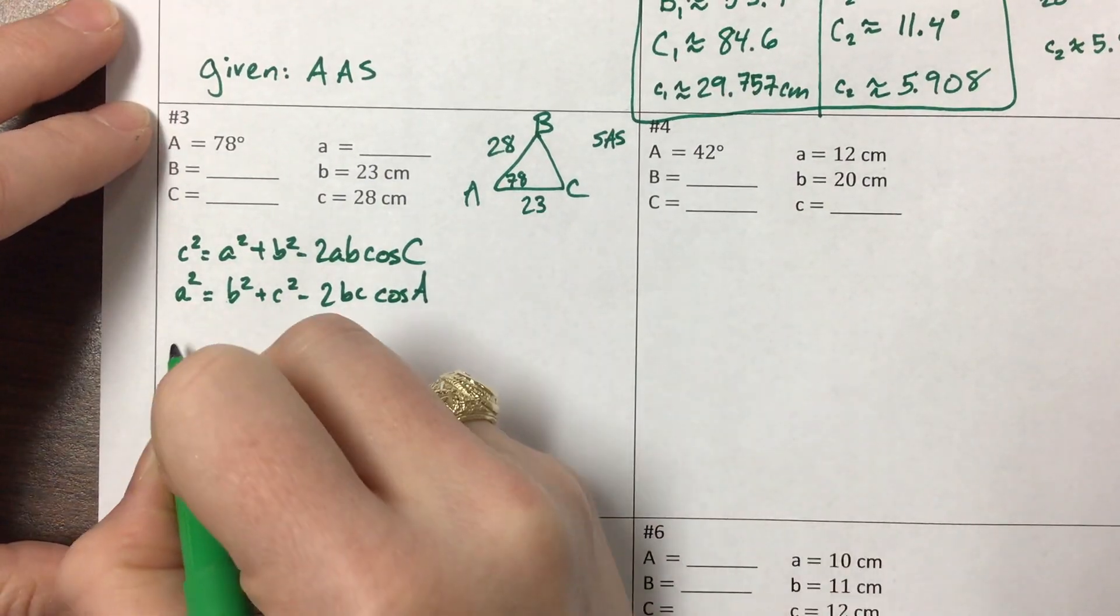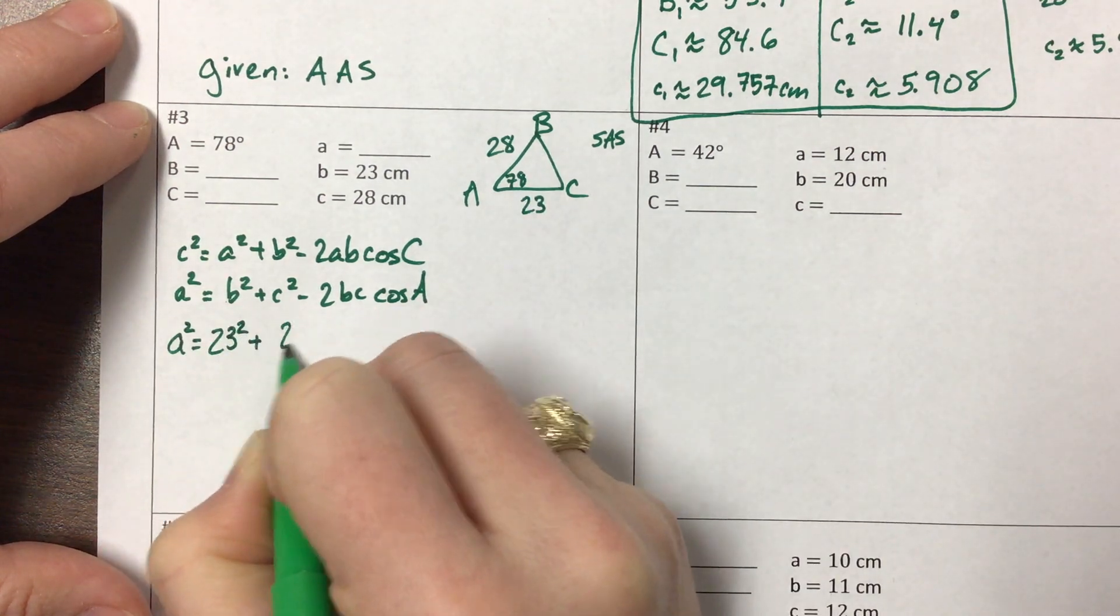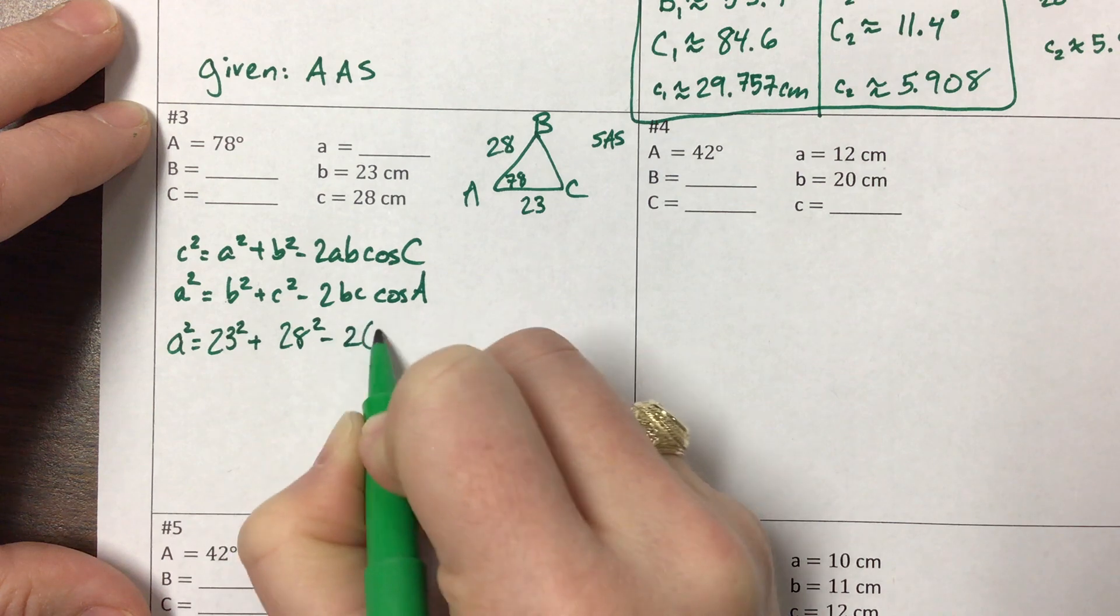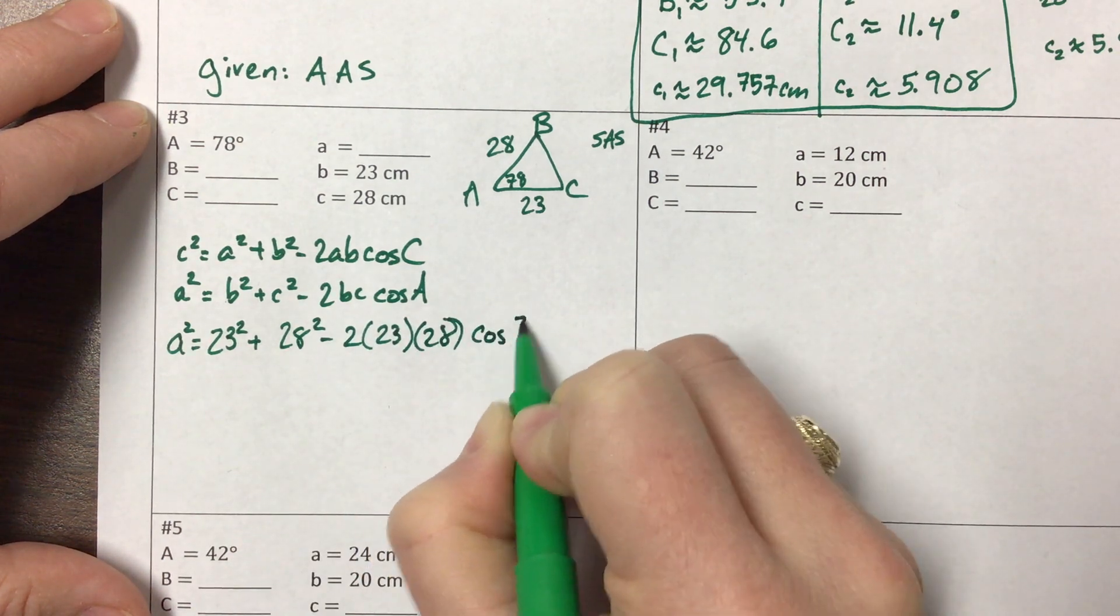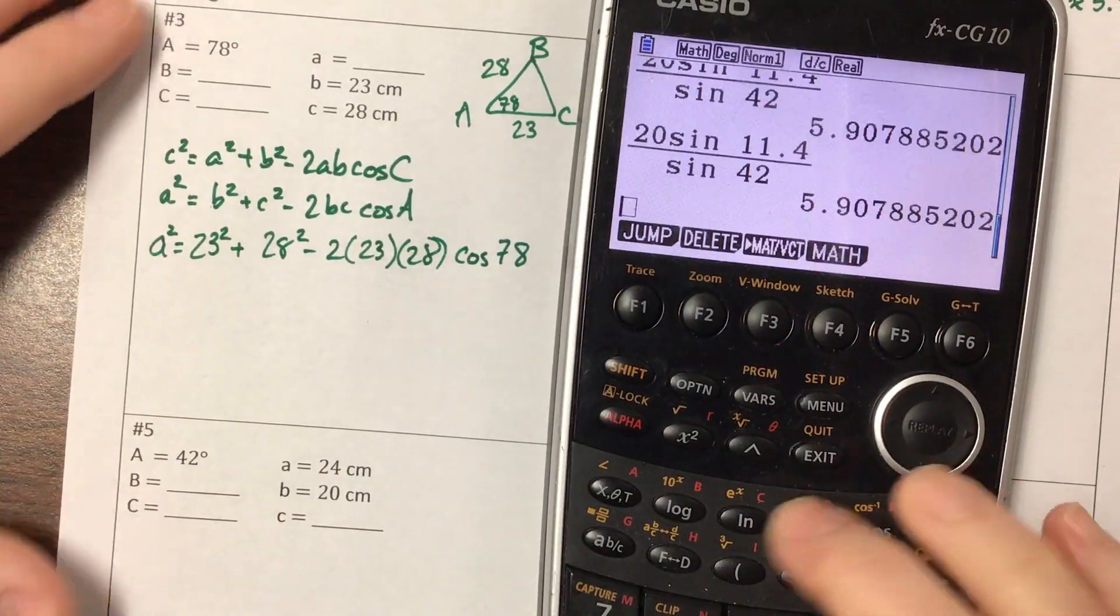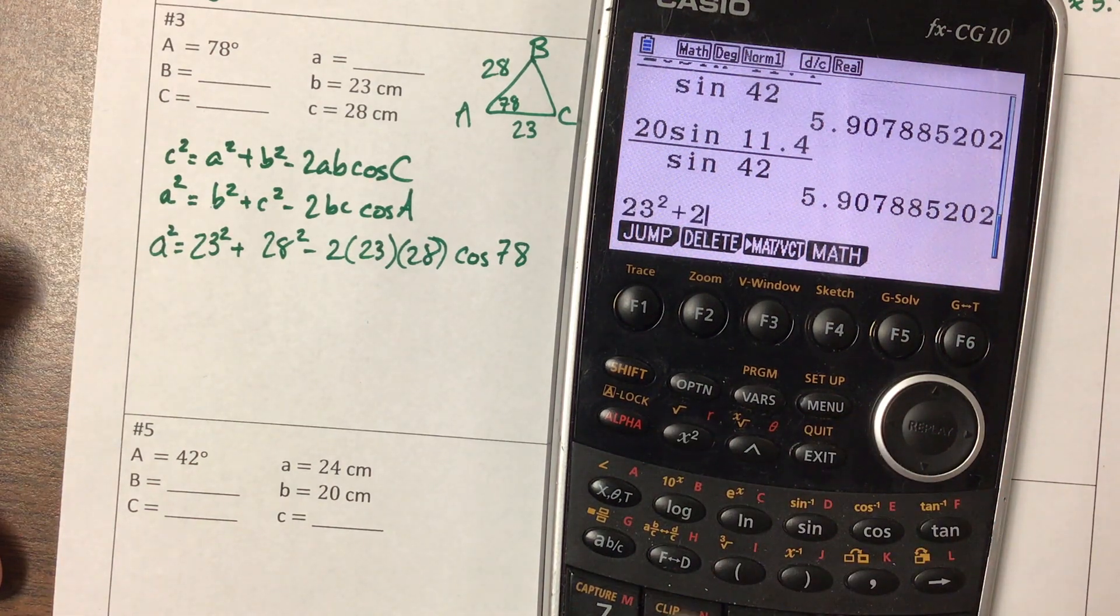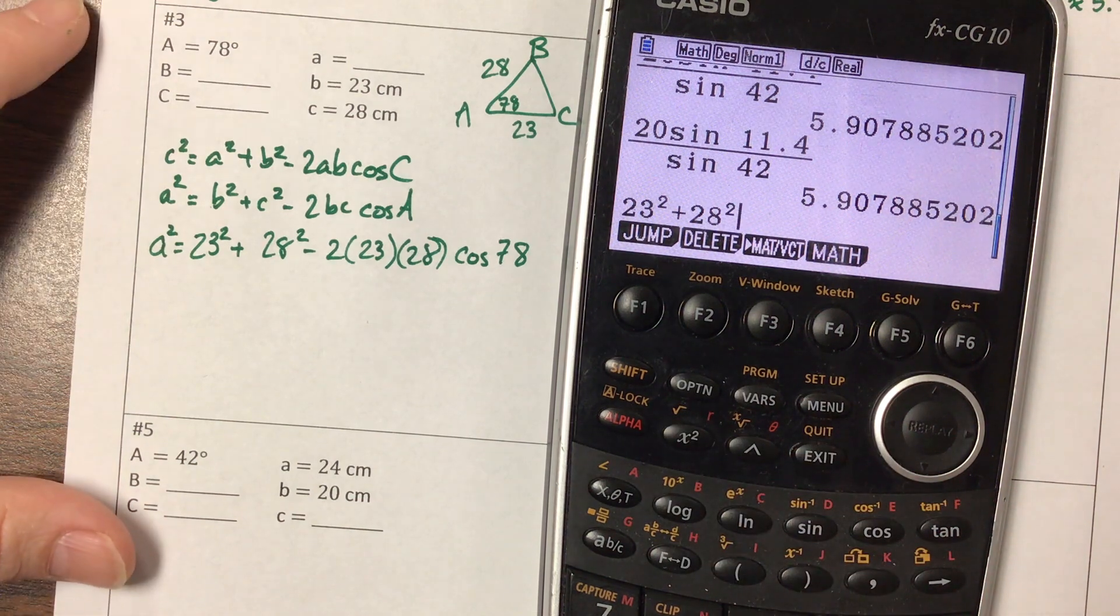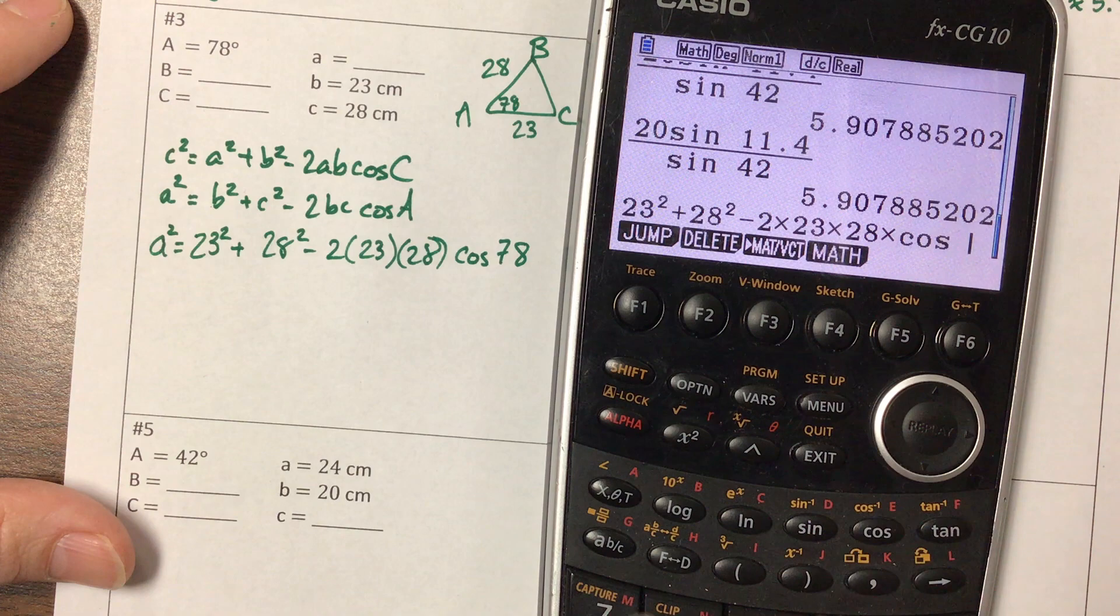Okay, so I'm gonna plug this in. I don't know a². I do know that b is 23, so this is 23² + 28² - 2(23)(28)cos 78°. So I'm gonna grab my calculator. So this is 23² + 28² - 2(23)(28)cos 78°.